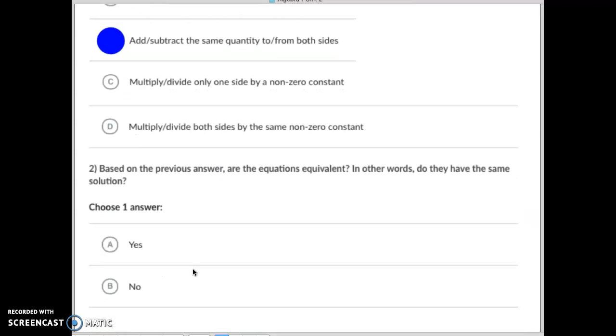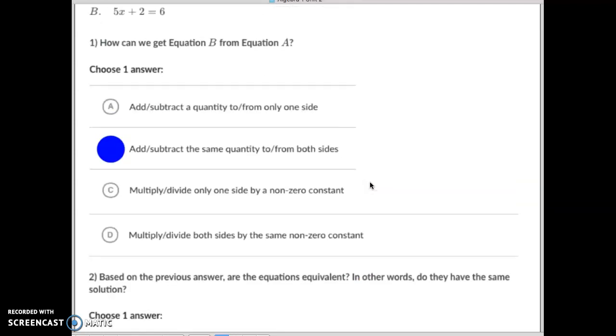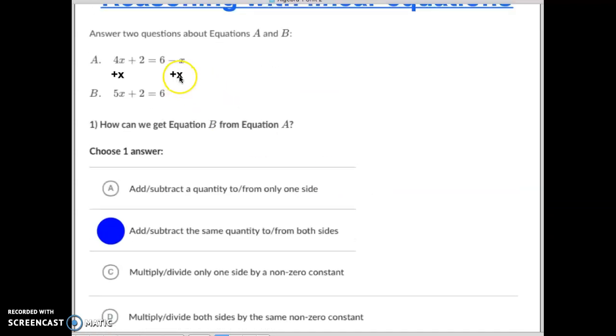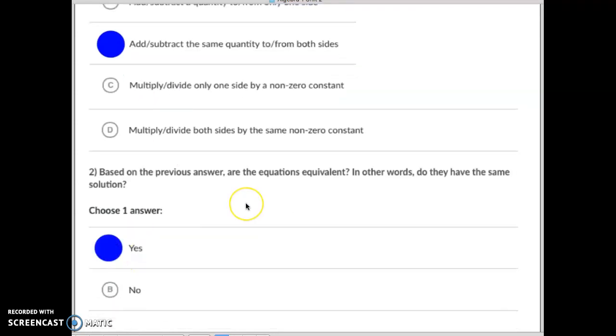Then, portion two is basically what they're saying here. It says, based on the previous answer, are the equations equivalent? In other words, do they have the same solution? What you can think about is just, is this a typical math move to, if you add something to one side, do you add something to the other side? And yes, this is typically how you would solve it. So if that's typically how you would solve it, the answer is yes. That is, they are equivalent.